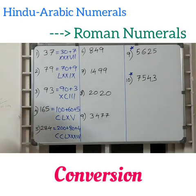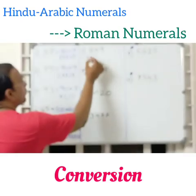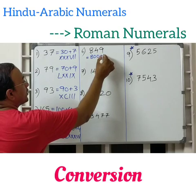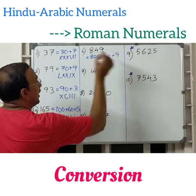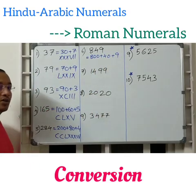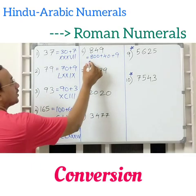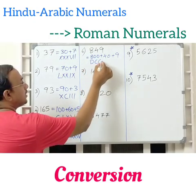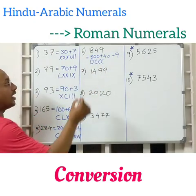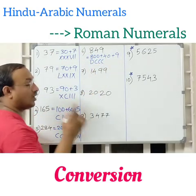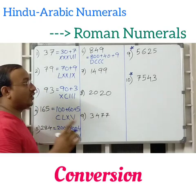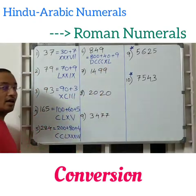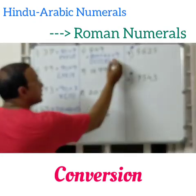Next, 849. First write it as expanded form: 800 plus 40 plus 9. So 800 is nothing but DCCC, and 40 — as we remembered from the previous video — is nothing but XL. And 9 is IX.